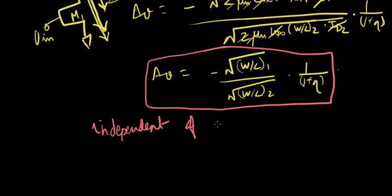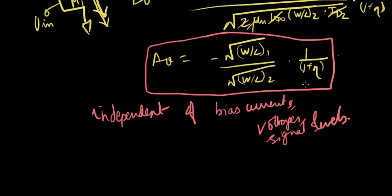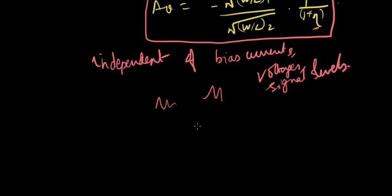So what does this tell us? It tells us that the gain of the transistor, of this amplifier now, is independent. Independent of what? Independent of bias currents, voltages, signal levels, whatever you might want to call them. All right, so what does this mean? Once you're done with, once you're done designing the transistor, and if you neglect the effect of eta with the output voltage, your gain is going to depend only on the device dimensions. And that is really good because if you have any varying input signals or output signals, your gain is not going to vary.